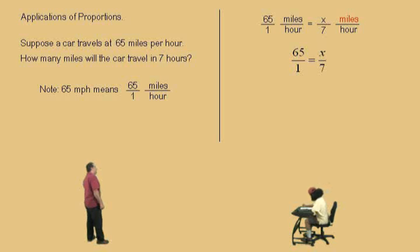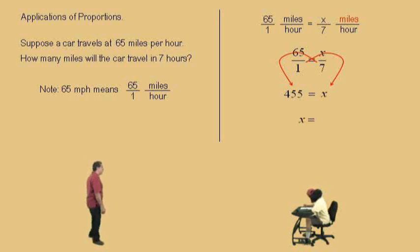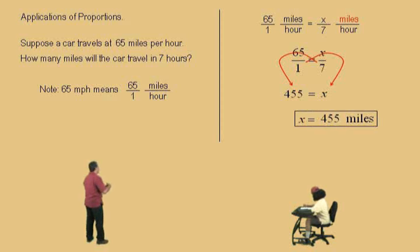Cross-multiply. That's right, cross-multiply. Okay, now, 65 times 7 is what? 455. That's right, and 1 times x? x. That's right, and so our answer is 455 miles, and so,